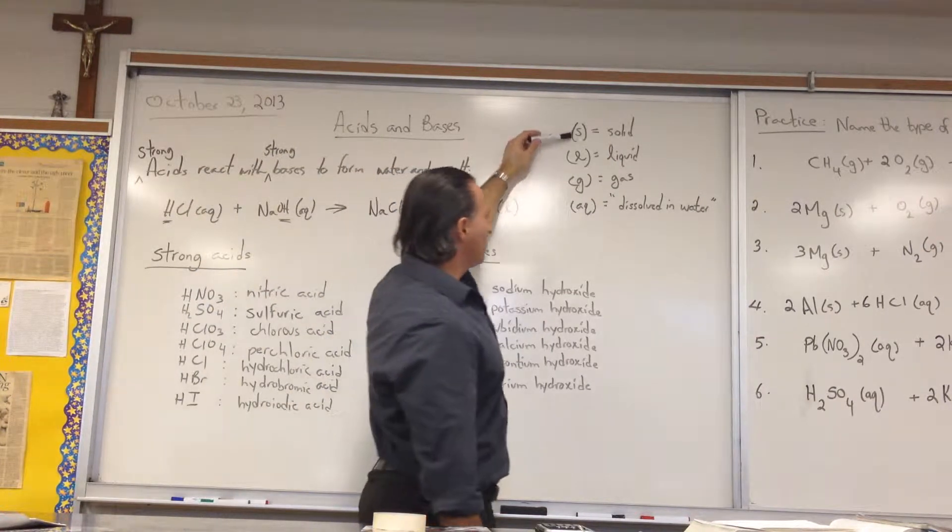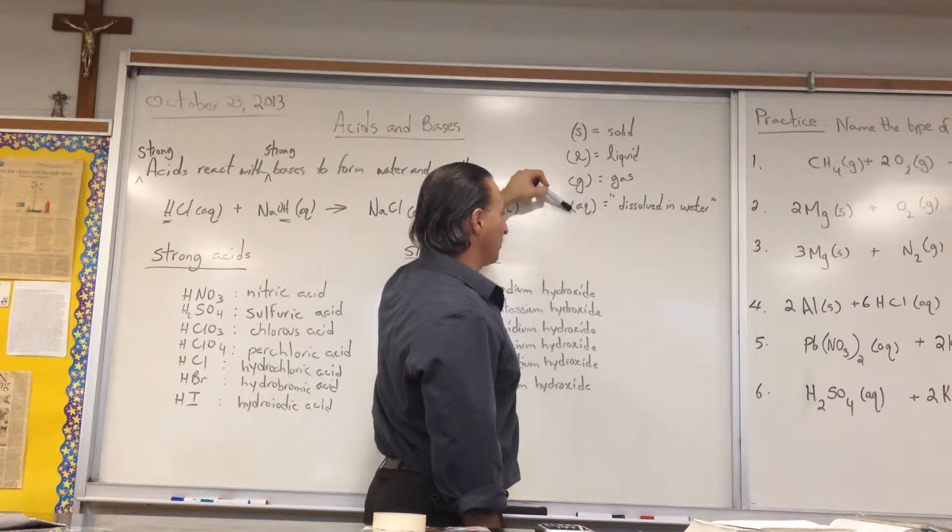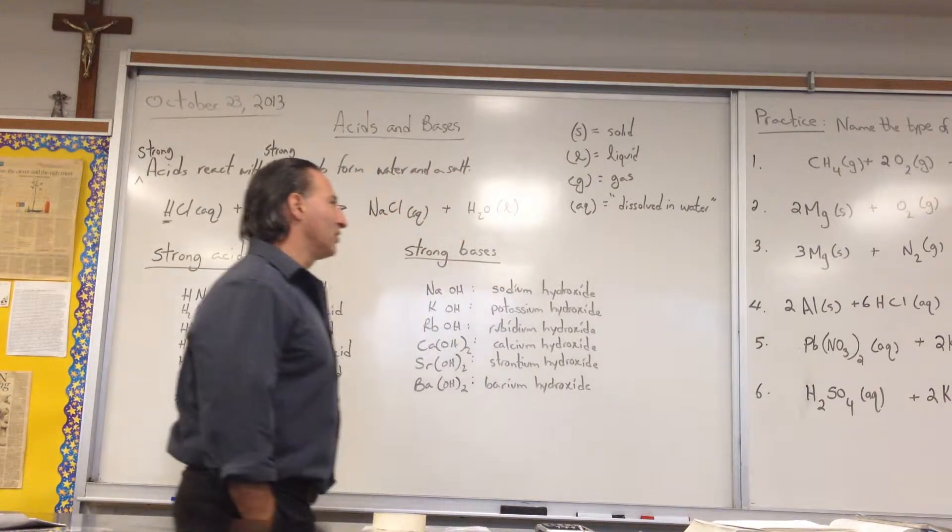Also remember that these symbols mean the four different states: three different states of matter and something dissolved in water. S is for solid, L is for liquid, G is for gas, AQ means dissolved in water.